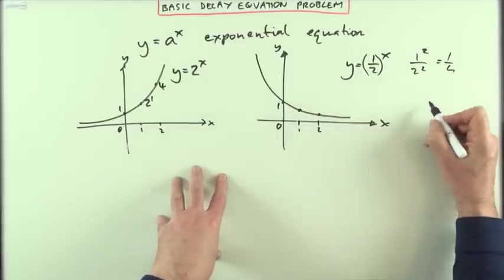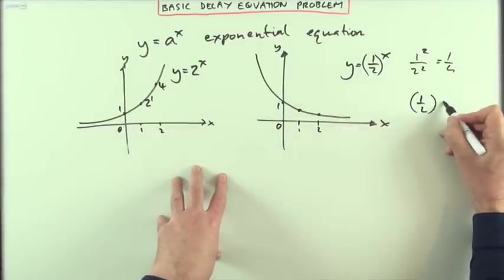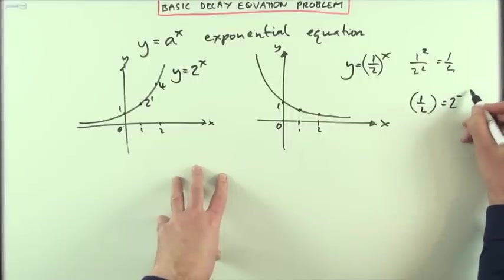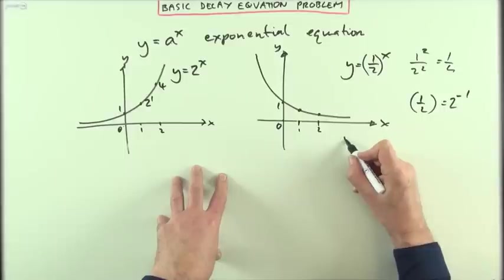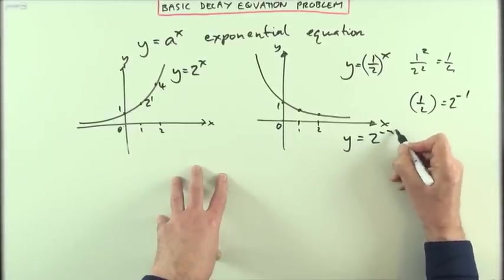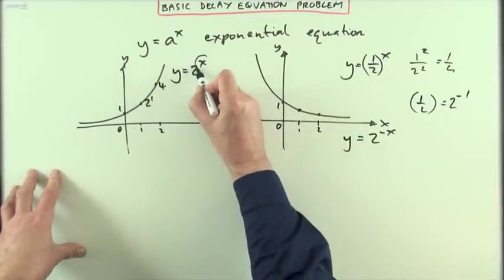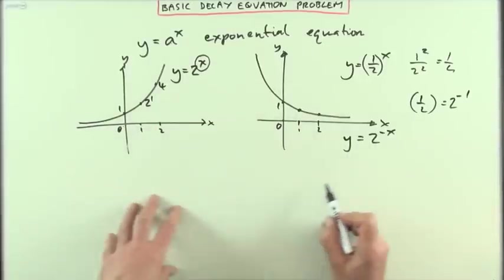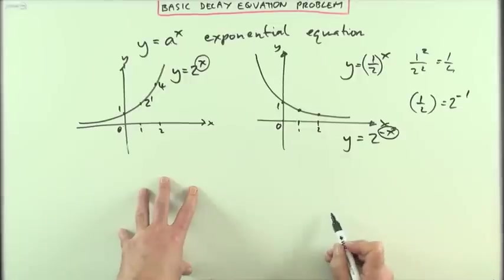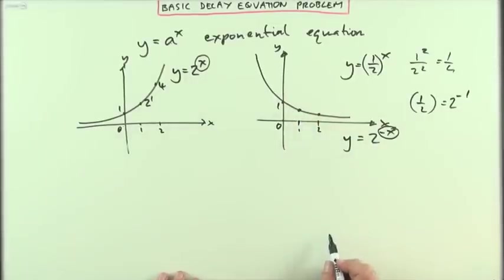But another way of writing this would be, since a half is 2 to the negative 1, that could be written as y equals 2 to the negative x. So when you see a positive index, it means you've got a growth equation, and when you see a negative in the index, it means you've got a decay equation.